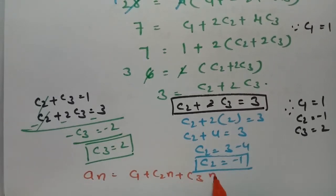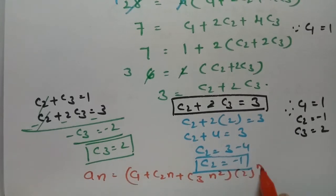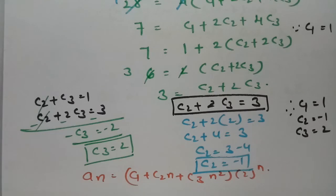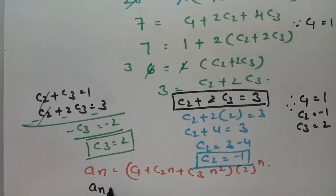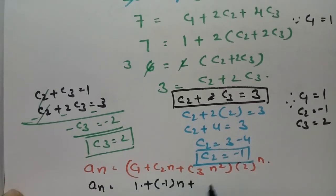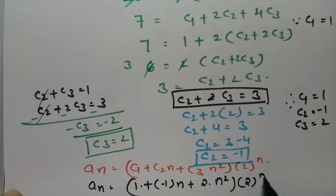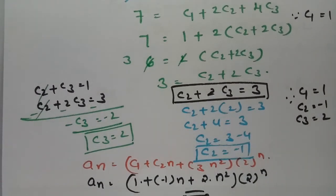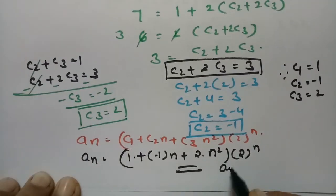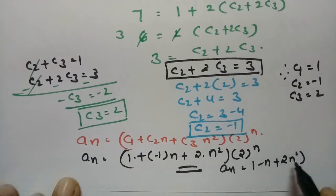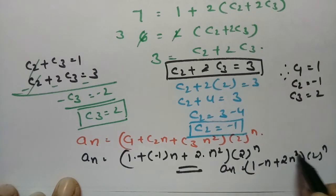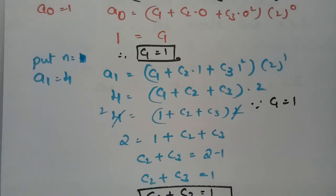The general solution is a_n = (c_1 + c_2·n + c_3·n²) · 2^n. Substituting the values: c_1 = 1, c_2 = -1, c_3 = 2, so a_n = (1 - n + 2n²) · 2^n. This is the complete solution for the given third order linear homogeneous recurrence relation.